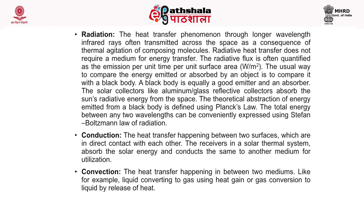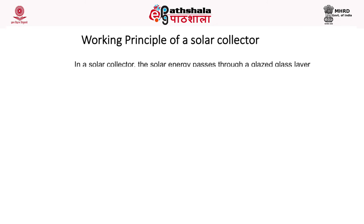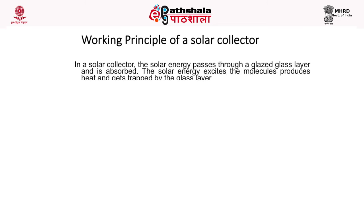The receivers in a solar thermal system absorb the solar energy and conduct it to another medium for utilization. Convection is the heat transfer happening between two mediums — for example, liquid converting to gas using heat gain, or gas conversion to liquid by release of heat. What is the working principle of a solar collector?